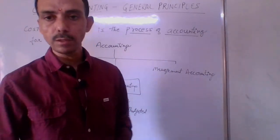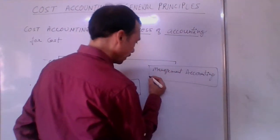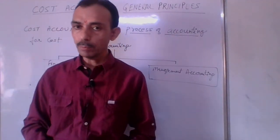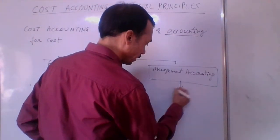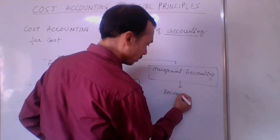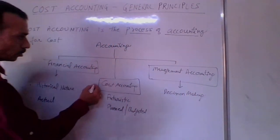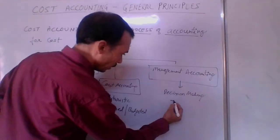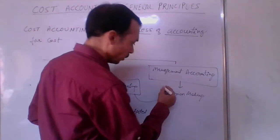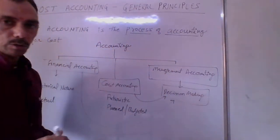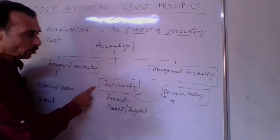Management accounting is the decision-making branch. This is the newest branch of accounting. Under management accounting, we take information from both financial accounting and cost accounting, and then make decisions.